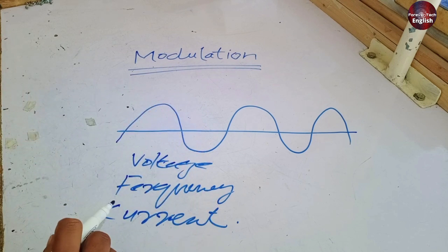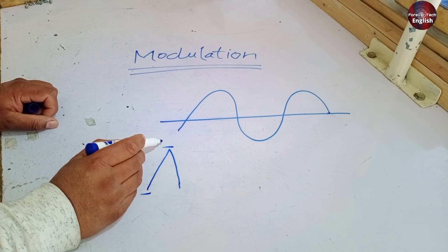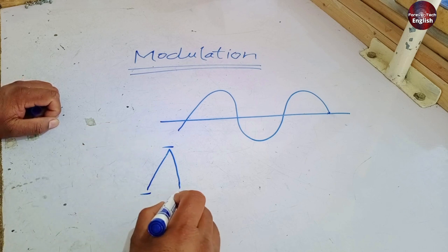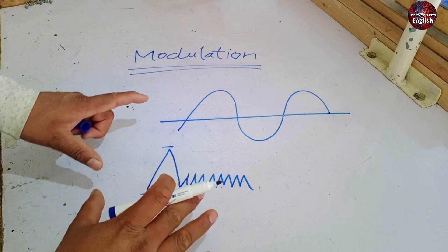When we bring changes to any of these, for example, if we talk about current, it has amplitude, which is its height. If we change its height, width, or frequency, that is called modulation. So that is the simple definition of modulation.